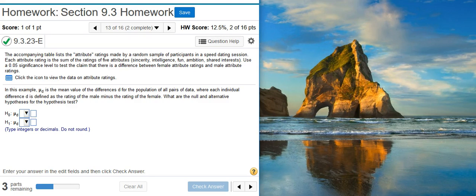Here's our problem statement. The accompanying table lists the attribute ratings made by a random sample of participants in a speed dating session. Each attribute rating is the sum of the ratings of five attributes: Sincerity, Intelligence, Fun, Ambition, and Shared Interest. Use a 5% significance level to test the claim that there is a difference between female attribute ratings and male attribute ratings.